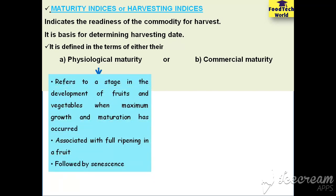In physiological maturity, it refers to a stage in fruits and vegetables when maximum growth and maturation has occurred. Physiological maturity occurs when development of fruits and vegetables is over. It is associated with full ripening in a fruit, and we know that after ripening, senescence or cell death occurs.